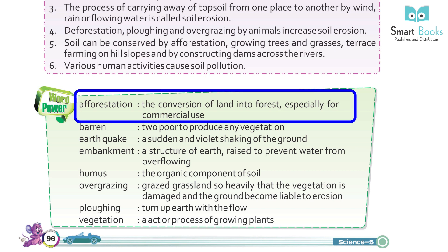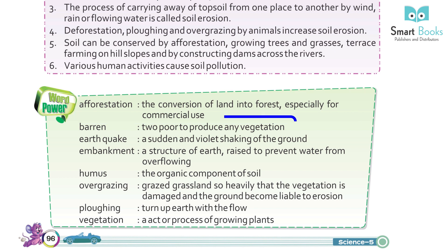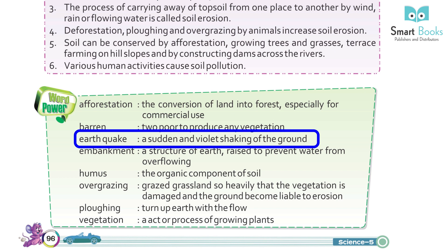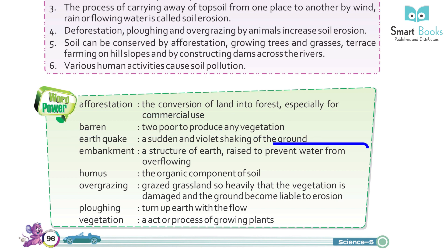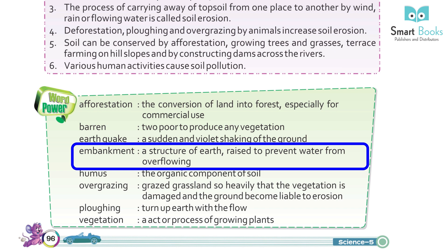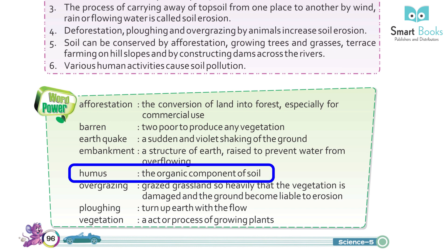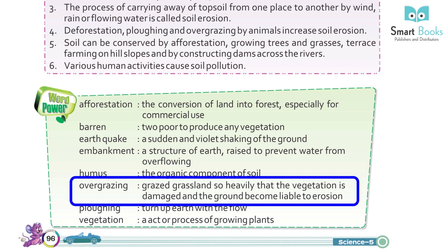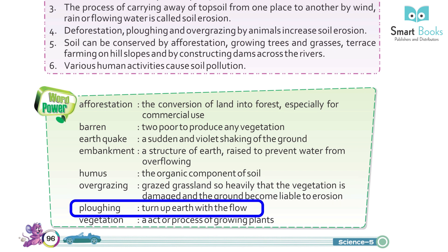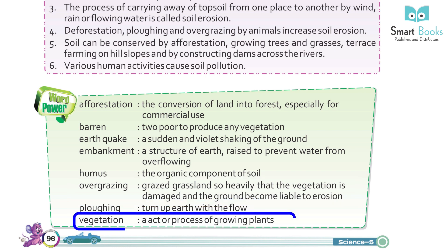Word Power: Afforestation — the conversion of land into forest, especially for commercial use. Barren — too poor to produce any vegetation. Earthquake — a sudden and volatile shaking of the ground. Embankments — a structure of earth raised to prevent water from overflowing. Humus — the organic component of soil. Overgrazing — grazing grasslands so heavily that the vegetation is damaged and the ground becomes liable to erosion. Ploughing — turning up earth with the plough. Vegetation — the active process of growing plants.